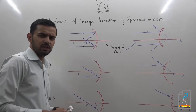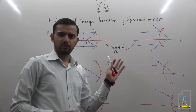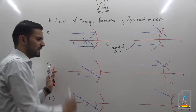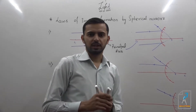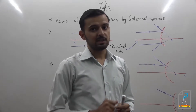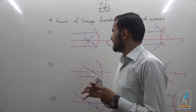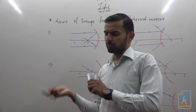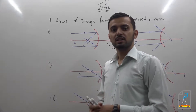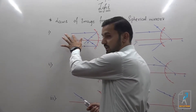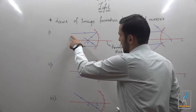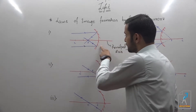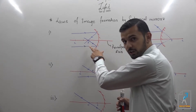We have various ray diagrams related to this and we'll carry on with them. Now let's come to the second rule: light follows the property of reciprocity. That means if light behaves in one manner from one direction, then from the other direction it will behave in the same manner. For example, rays coming parallel to the principal axis, after reflection from the concave surface, cut at a point called the focus.